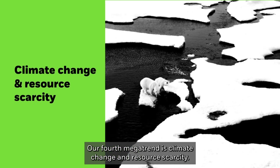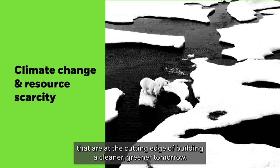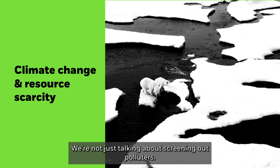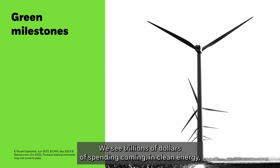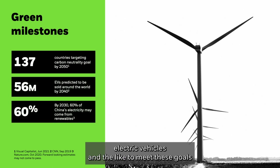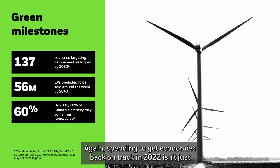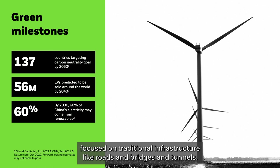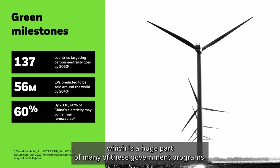Our fourth megatrend is climate change and resource scarcity. We're talking about firms at the cutting edge of building a cleaner, greener tomorrow — not just screening out polluters, but owning innovators. We see trillions of dollars of spending coming in clean energy, electric vehicles, and the like, driven by consumers, corporations, and governments. Government spending to get economies back on track isn't just focused on traditional infrastructure like roads and bridges — it's also focused on renewable infrastructure, which is a huge part of many of these government programs.